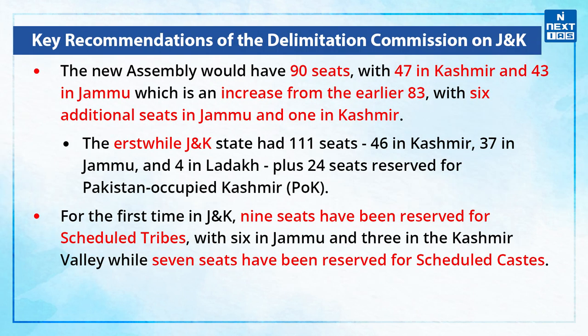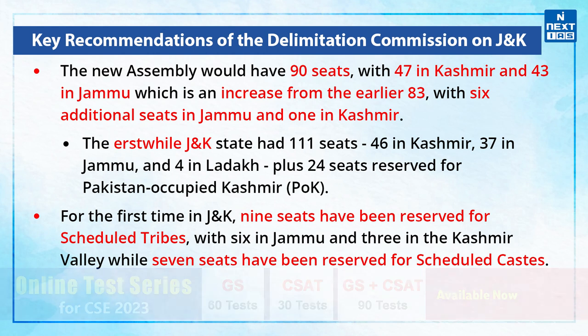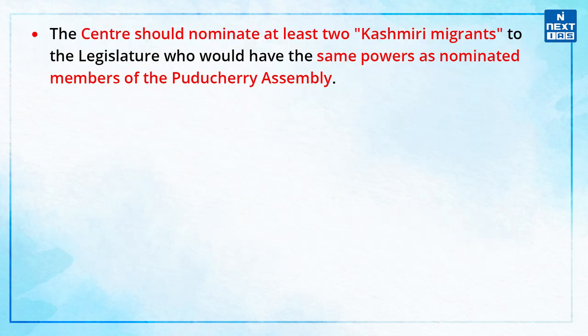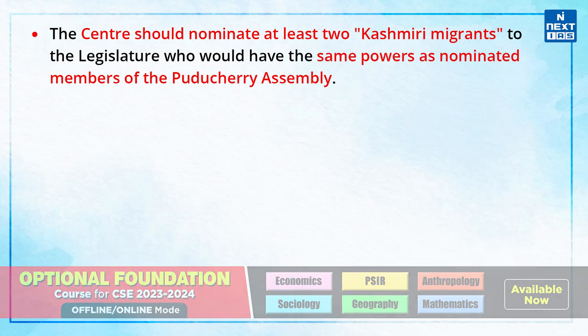Coming to the key recommendations of the delimitation commission on Jammu and Kashmir: the new assembly would have 90 seats, with 47 in Kashmir and 43 in Jammu, which is an increase from the earlier 83, with six additional seats in Jammu and one in Kashmir. The erstwhile Jammu and Kashmir state had 111 seats, i.e. 46 in Kashmir, 37 in Jammu and 4 in Ladakh, plus 24 seats reserved for Pakistan-occupied Kashmir. For the very first time in Jammu and Kashmir, nine seats have been reserved for scheduled tribes, with six in Jammu and three in Kashmir Valley, while seven seats have been reserved for scheduled castes. The centre should nominate at least two Kashmiri migrants to the legislature, who would have the same powers as nominated members of the Puducherry Assembly.